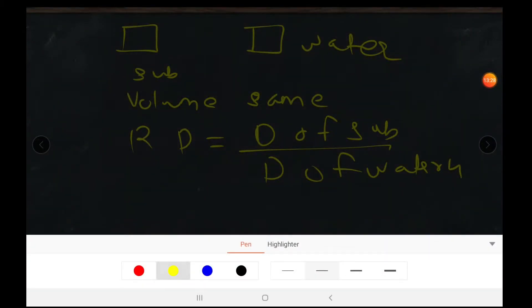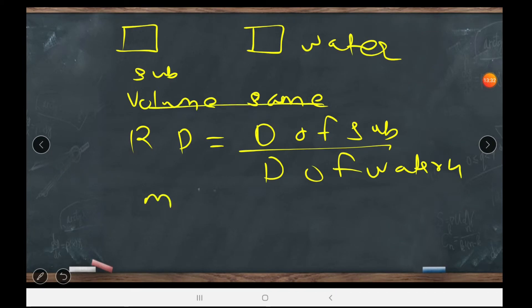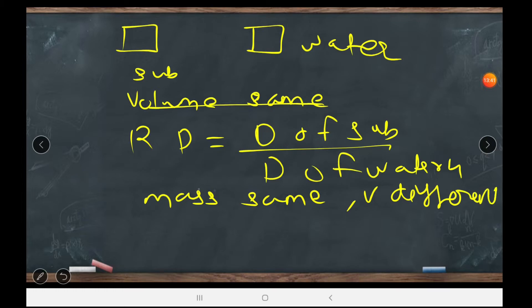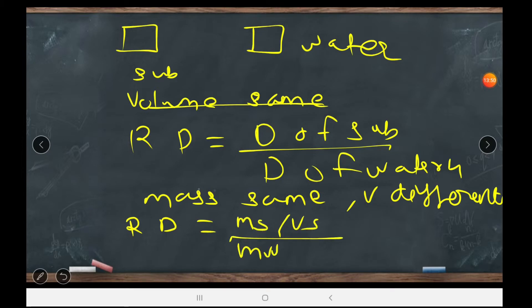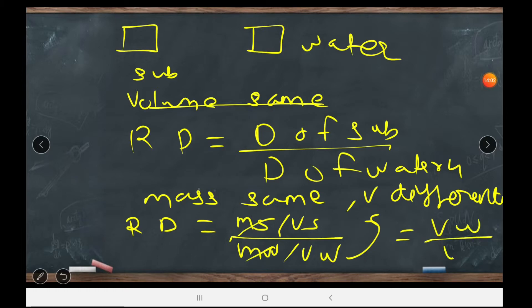Now what if the mass is the same but the volume is different? We again apply the relative density formula: density of substance divided by density of water. Substituting mass/volume for each, since mass of substance equals mass of water, the masses cancel, giving relative density equals volume of water divided by volume of substance.